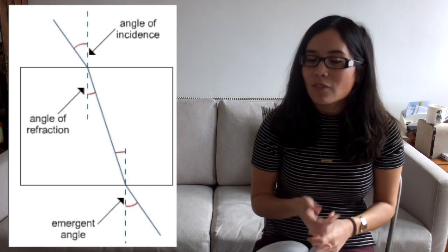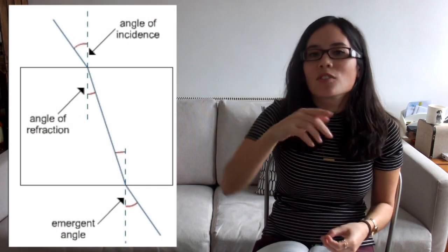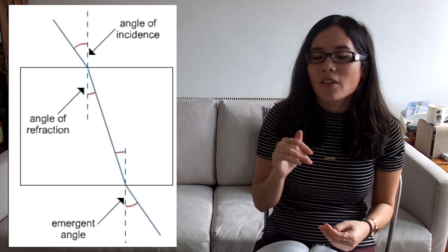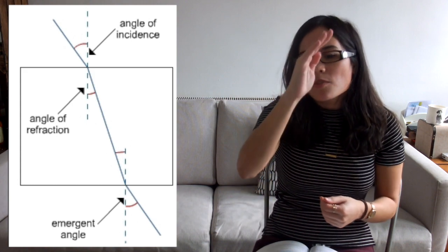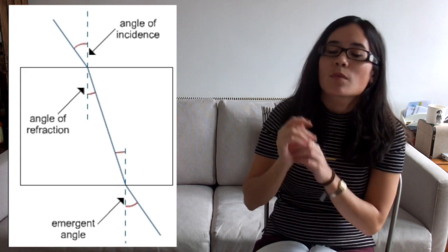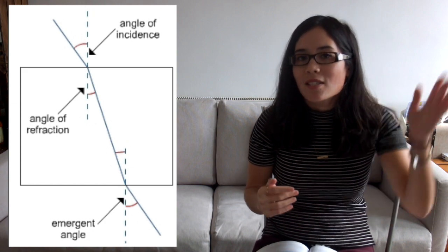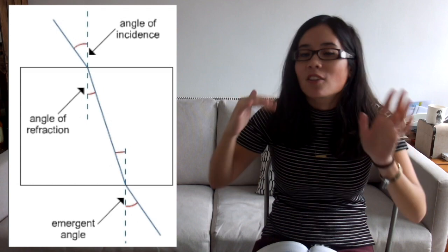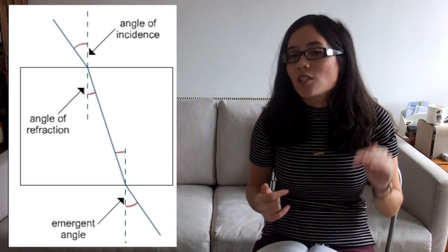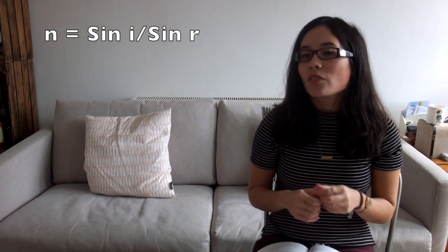I'm going to get more complicated now, so turn off if you don't need this. Explain what happens when a light ray enters a glass block. As the light ray enters the glass block, it bends towards the normal. Remember, the normal is the dotted imaginary line drawn at 90 degrees to the surface. It then exits the glass block where it bends away from the normal — so the incident ray and the refracted ray are parallel to each other. What is the formula used for calculating the refractive index? That is n equals sine i over sine r.